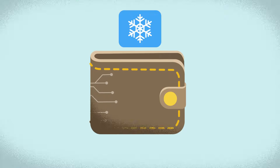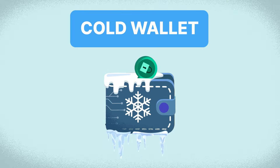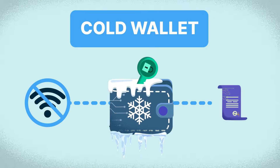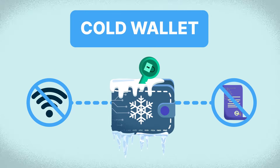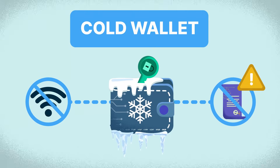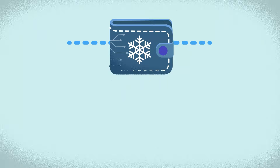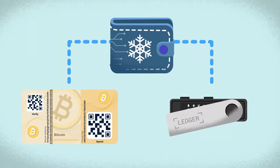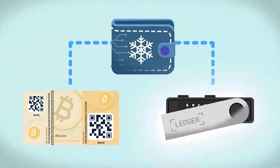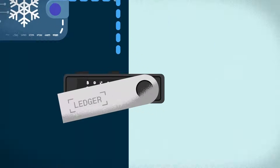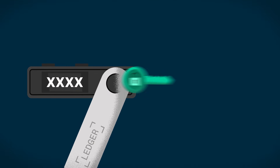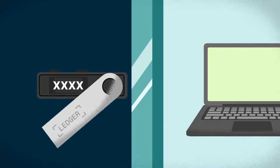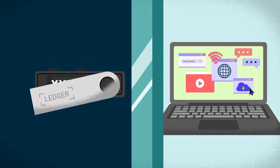In contrast, a cold wallet is simply a wallet whose private keys are not exposed to the internet. Additionally, beyond simple transfers, it should not be used to interact with any smart contract. They can come in different forms, such as a paper wallet or a hardware wallet, though the latter is the most common. In hardware wallets, private keys are generated and stored locally only within the device, and are not exposed to the internet even when used to sign transactions.